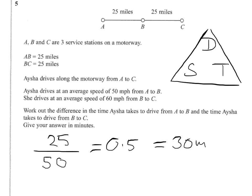The second part: again it's 25, but this time we divide by 60. We want to change our answer into minutes, so we then multiply by 60. You can see that we're dividing by 60 and then multiplying by 60, so they cancel out. If you work it out you'll get 25 — so the second part of the journey takes 25 minutes.